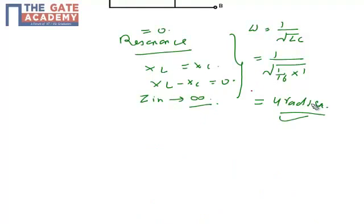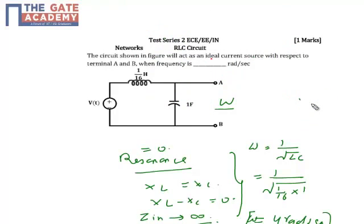In resonance, the frequency will be 4 radian per second. Then the circuit will act as an ideal current source. The value is 4. Thank you.